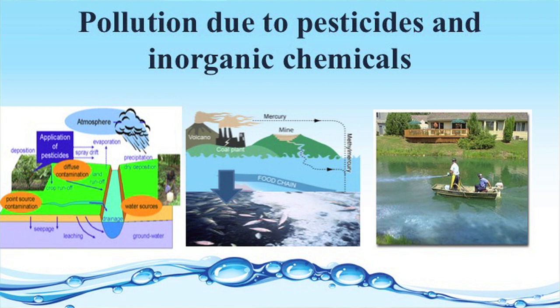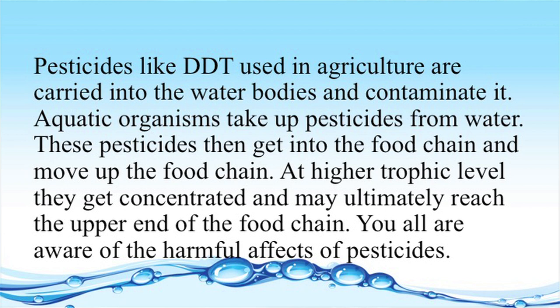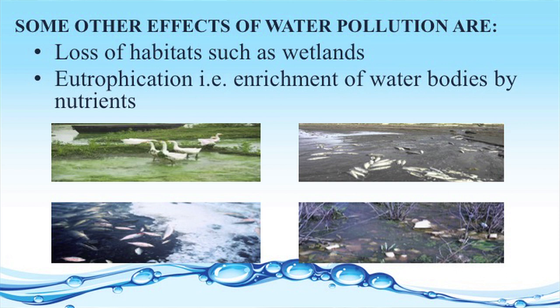Pesticides also affect our aquatic ecosystem. Pesticides like DDT used in agriculture are carried into water bodies and can contaminate them. Aquatic organisms take up these pesticides from water, which then get into the food chain and move up the food chain. At higher trophic levels they get concentrated and may ultimately reach the upper end of the food chain. Some other effects of water pollution include loss of habitat such as wetlands, and eutrophication — that is, enrichment of water bodies by nutrients.